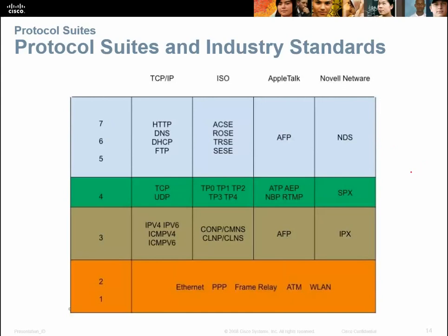Standards are set by organizations in the industry. Novell had their standards, Apple Talk had theirs, ISO came out with theirs, and TCP/IP came out with theirs. Novell had NDS, SPX, and IPX, which were good in their days — I had some use with them in the early-to-mid 90s. The more common TCP/IP protocols today include HTTP, DNS, DHCP, and FTP. You'll also recognize IPv4, IPv6, ICMP, UDP, and TCP, as well as some ISO and Apple Talk industry standards.